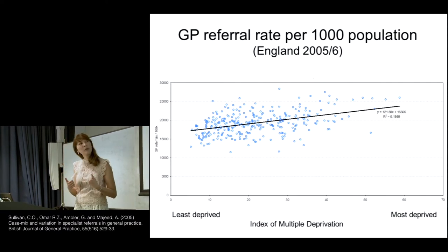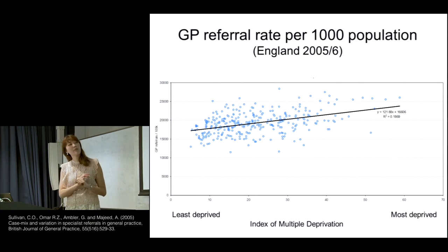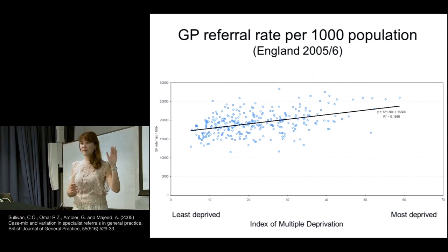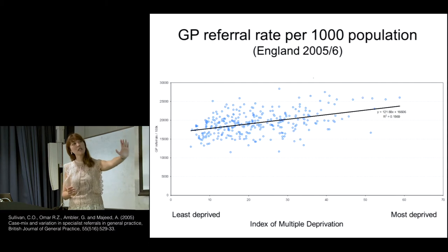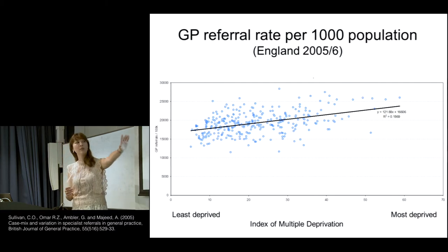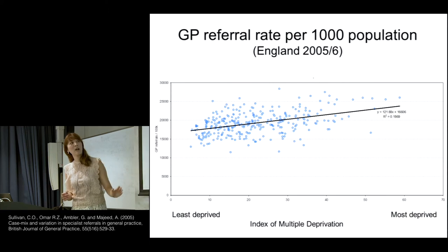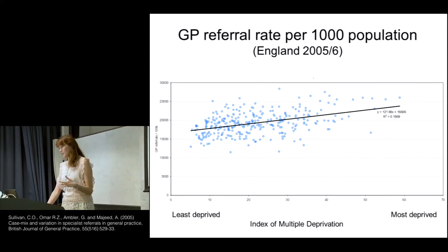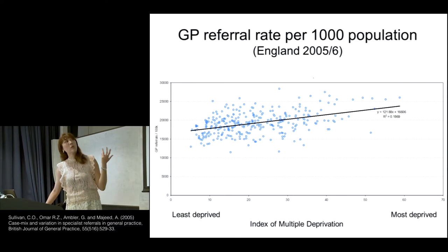But we must also ask ourselves: is this gradient steep enough? We know it's going in the right direction, but should it be even steeper? Should it be much lower for the least deprived, or much higher for the most deprived? We don't know — does it reflect need well?